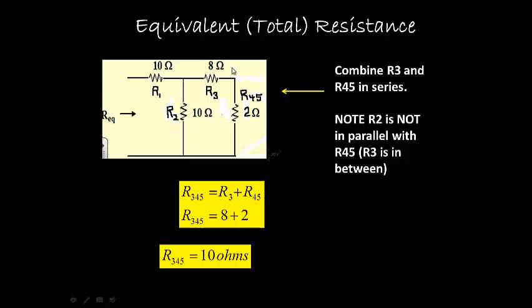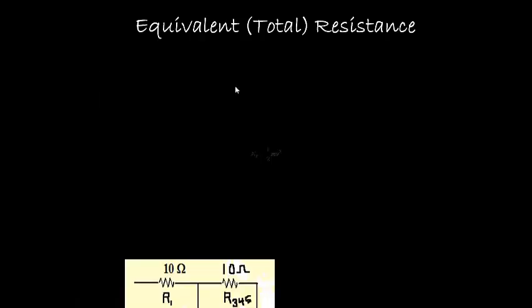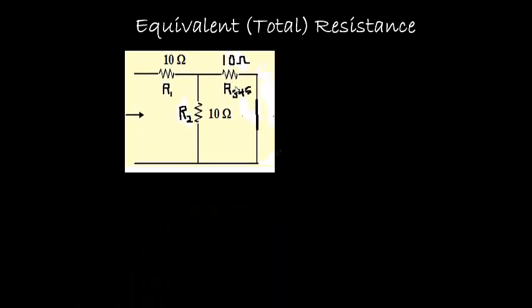Now we can replace that with a 10 ohm resistor called R345, which we've done here. Then we take a look at R345 and say, okay, the next thing would be R2. Are those in series or parallel?